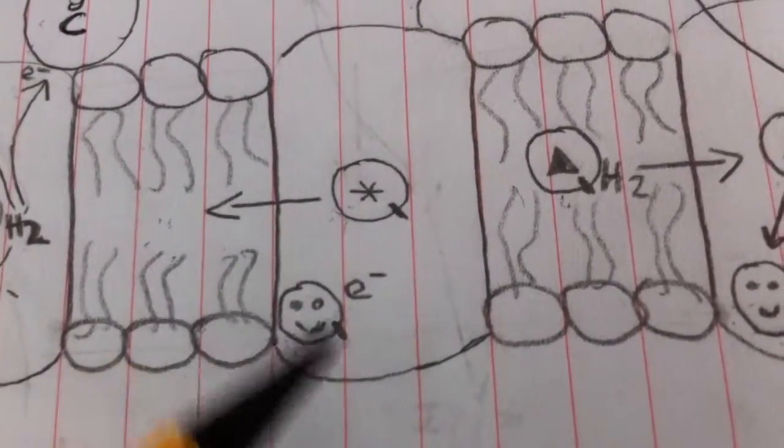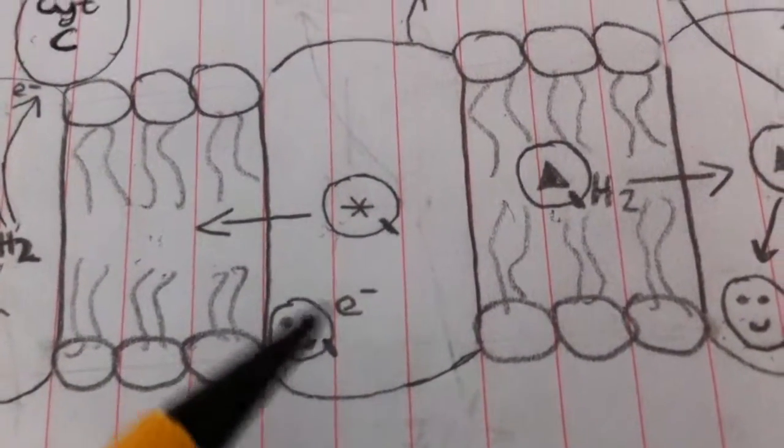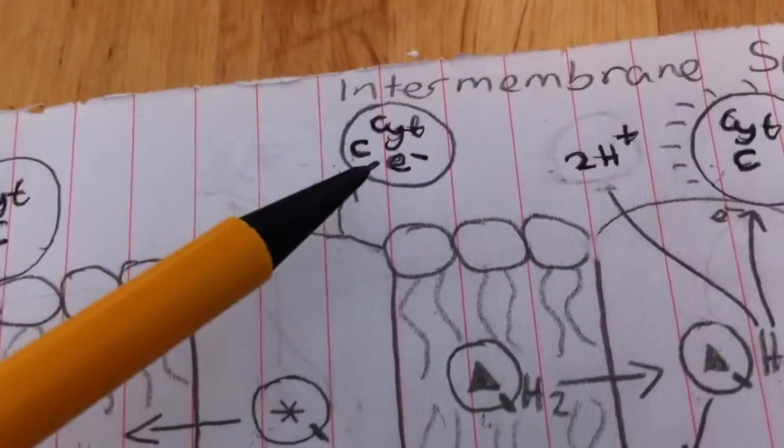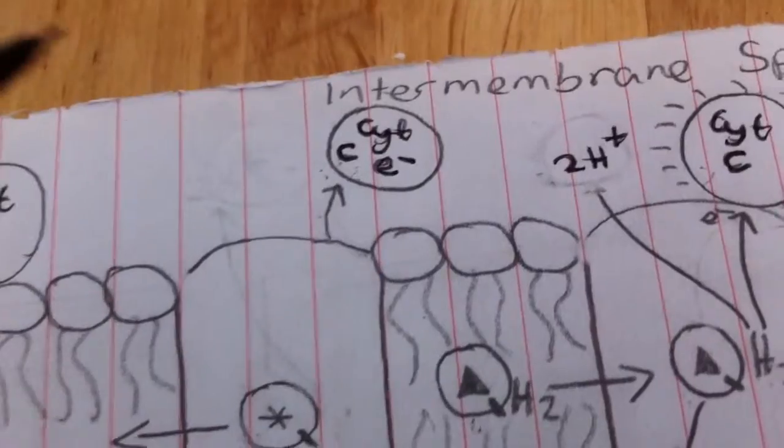We've got this coenzyme Q down here with just one electron. And we've got cytochrome C up here with an electron that it's now taking to complex 4.